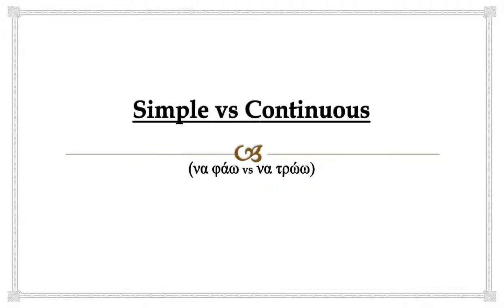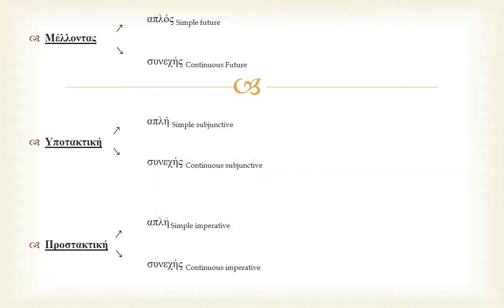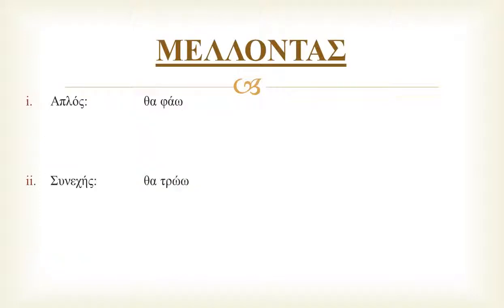Hi there! Our video this time is about simple and continuous verb forms, what we call in linguistics verb aspect. These two verb aspects apply not only for the future tense but also for the subjunctive and imperative. We'll be starting with the future tense.